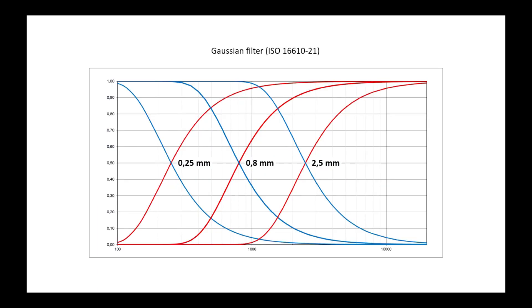When we vary the cutoff, we see that the shape of the filter's transmission curve remains the same, but is translated in wavelength. This type of graph is found in standards presenting filters, such as ISO 16,610, part 21, which describes the Gaussian filter for profiles.